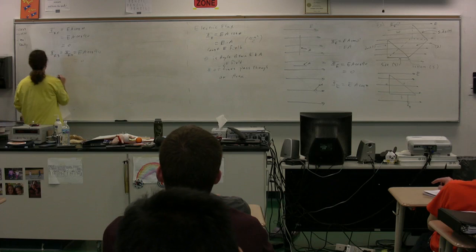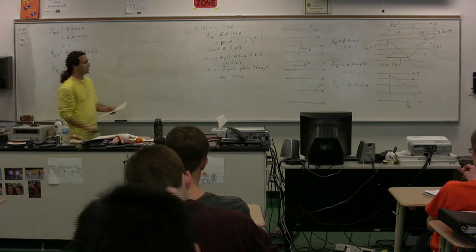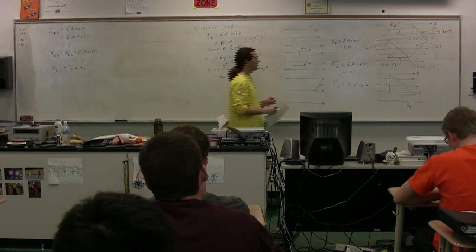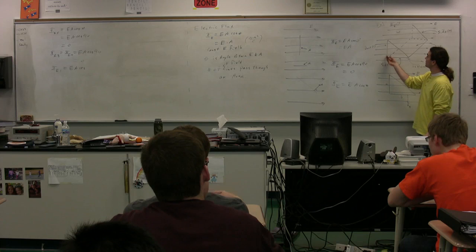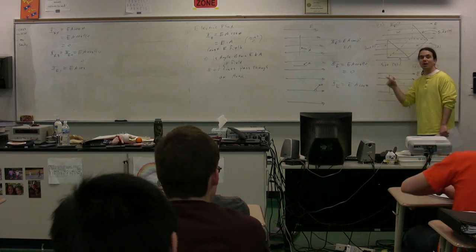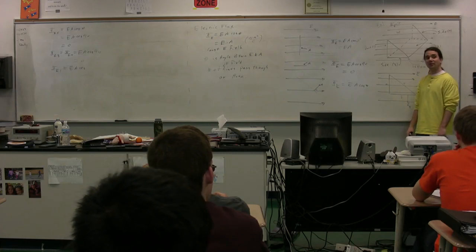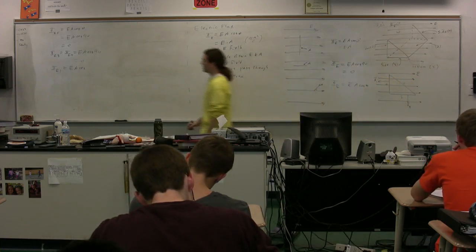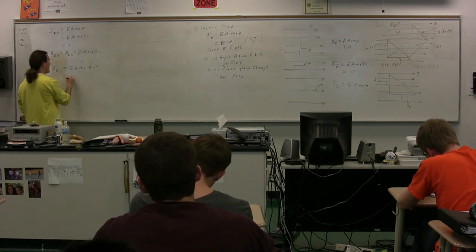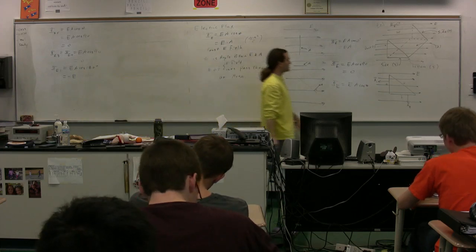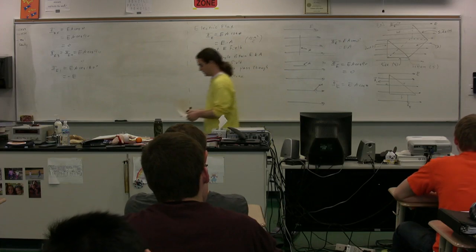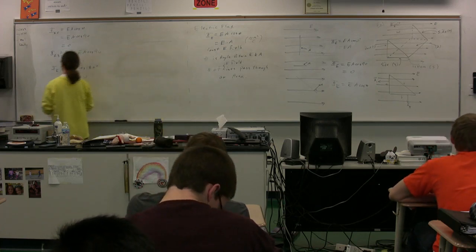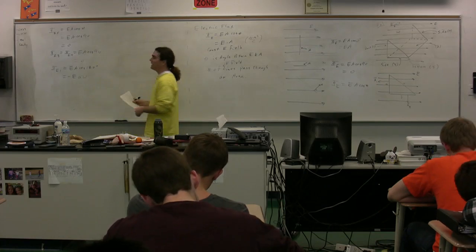Next, the electric flux through side 1, which is the back. We have E times A times cosine of the angle. The area vector for the back side points to the left — opposite the electric field — so the angle is 180 degrees. The cosine of 180 gives us negative one, so the flux through side 1 is negative E times A times W, where the area of the back side is A times W.